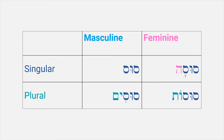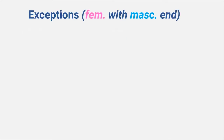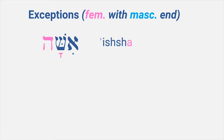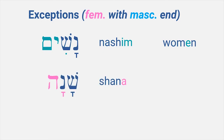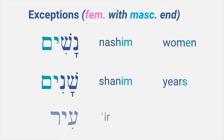So what about exceptions? Yes, there are exceptions — the bane of all language learners. Here are some of the most common ones. First, some feminine words that take a masculine ending. Isha, woman, changes to nashim, women — it takes a masculine ending and also changes the word, so it is irregular in two ways. Then shana, year, becomes shanim, years. And finally ir, city, becomes irim, cities.